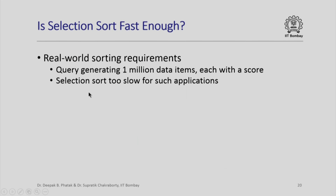Is selection sort fast enough for practical requirements? In a real-world scenario, a query on an internet search engine for a popular topic like Mahatma Gandhi or Independence Day India on Google or Bing will generate more than 1 million data items. Each has a score and you have to rank them in decreasing order. In the real world having 1 million or more data items is not uncommon, and selection sort would be hopelessly slow for such applications.